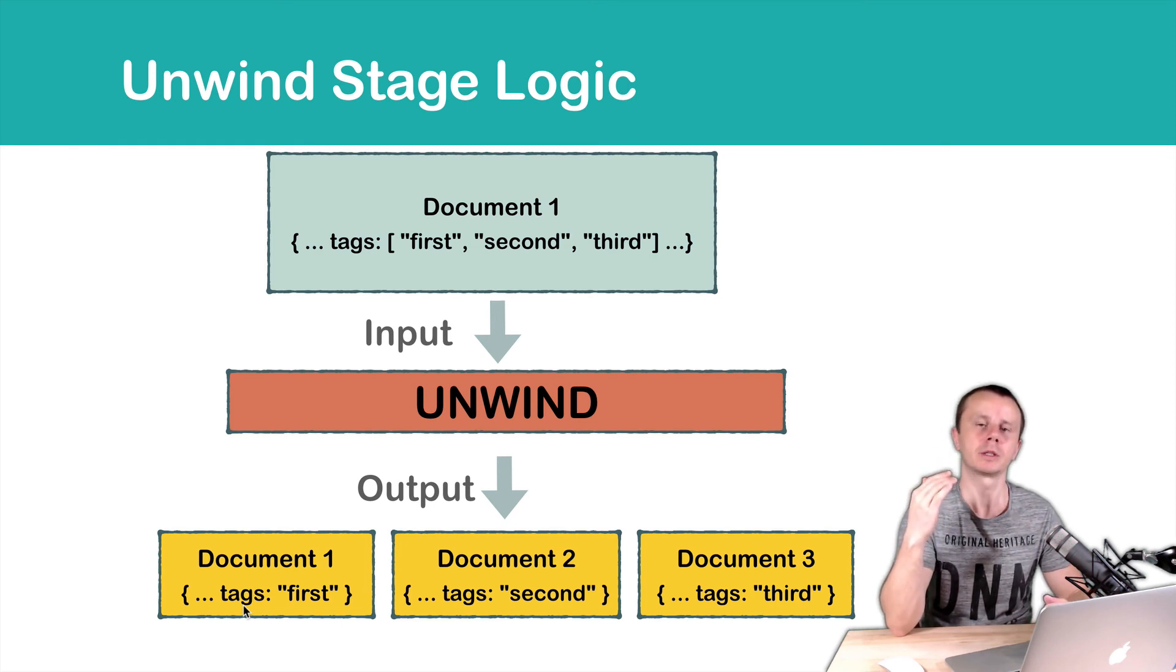If input document contains, for example, 15 elements in the array, then we will produce 15 output documents just for one input document. And so on.